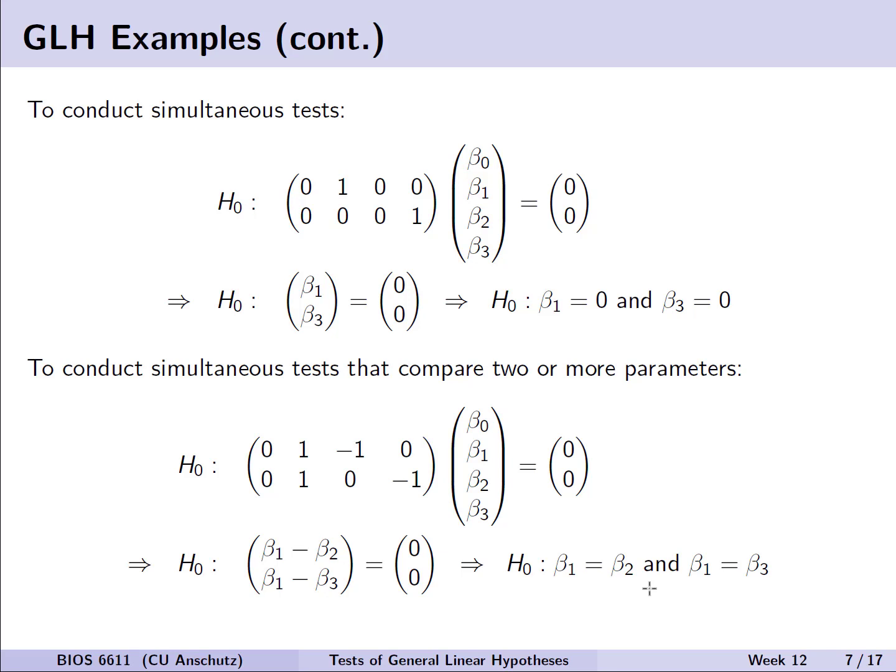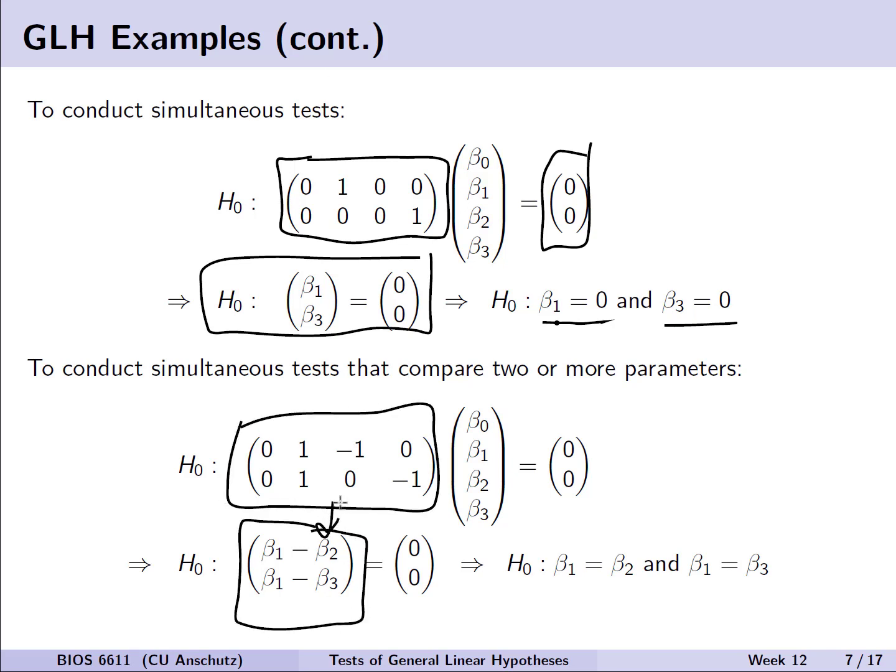One of the interesting things about the general linear hypothesis framework is that we can also simultaneously test multiple values at one time. For example, if we wish to test the value of beta 1 and beta 3 both being equal to 0 at once, we can set up our C matrix to be two rows. If we multiply this out with our matrices, we see that our null hypothesis is that beta 1 and beta 3 both equal 0. Likewise, we can also test the differences or different combinations of parameters, where we have beta 1 minus beta 2 and beta 1 minus beta 3 being tested simultaneously for both being equal to 0.